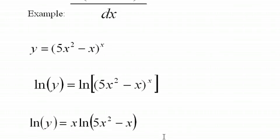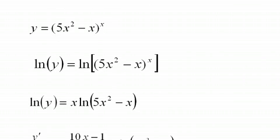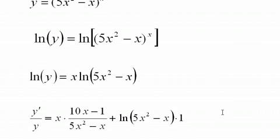Now, we take the derivative implicitly. And the log of y is y prime over y. And we use the product rule here. X times the derivative of this, x times the derivative of that, plus this, the log of the polynomial, times the derivative of x, which is merely 1.